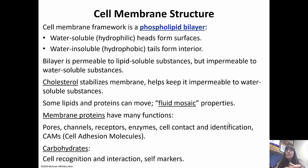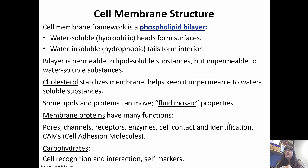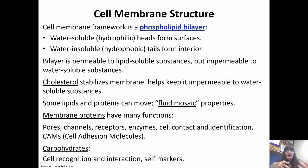Those membrane proteins interspersed throughout have a lot of functions. Some function as pores, others as channels so things can pass through, some function as receptors so hormones can bind to them, some function as enzymes to catalyze reactions, and others function in cell contact and identification. This means the immune system can identify self-cells — all of our cells have certain markers on them that signal they are self-cells.